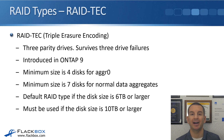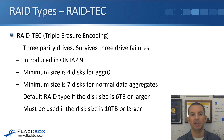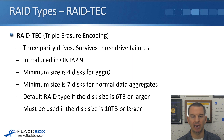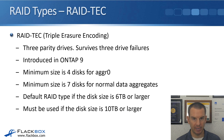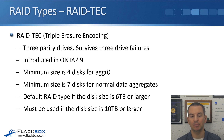The last type is RAID TEC, which stands for triple erasure encoding. RAID 4 was one parity drive, RAID DP is two parity drives, and RAID TEC is three parity drives, so it survives three drive failures. RAID TEC was introduced in ONTAP 9. With RAID TEC, the minimum size is four disks for aggregate zero and seven disks for normal data aggregates.